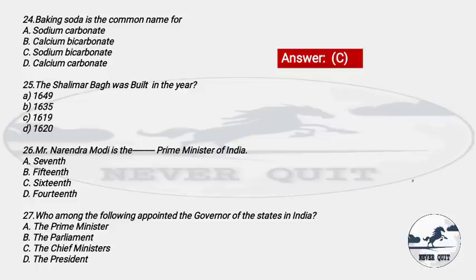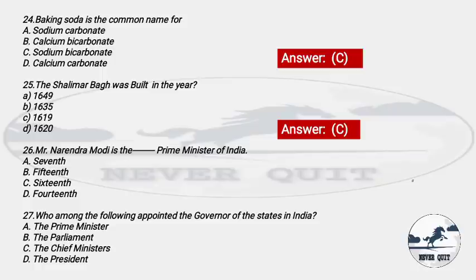Question 25: The Shalimar Bagh was built in the year — Options: A) 1649, B) 1635, C) 1619, D) 1620. The right answer is option C — 1619. Shalimar Bagh was built in 1619. As a bonus, tell me in the comments how many gardens Shalimar Bagh has and what its three parts are.